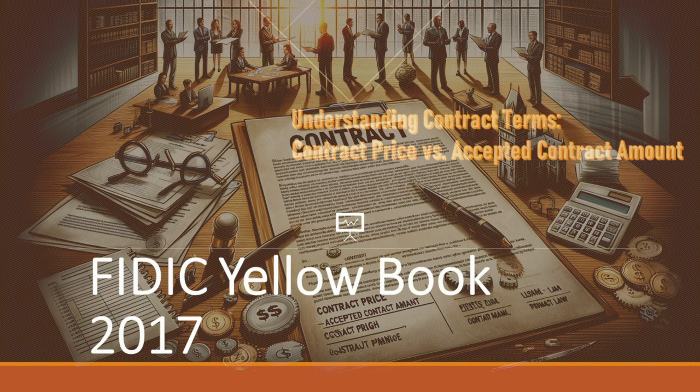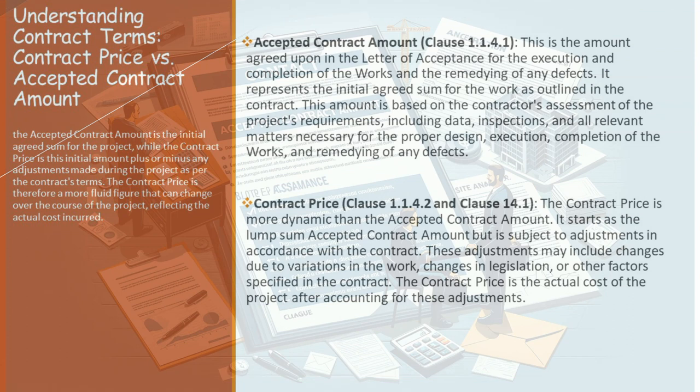Let's start by setting the stage. Imagine you're about to embark on a significant project. You've got your plans laid out, the team is ready, and you're about to sign a contract that will set everything into motion. This is where you encounter two terms: the accepted contract amount and the contract price. While they might sound similar, they hold different meanings and implications for your project.